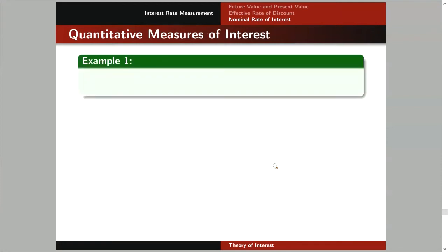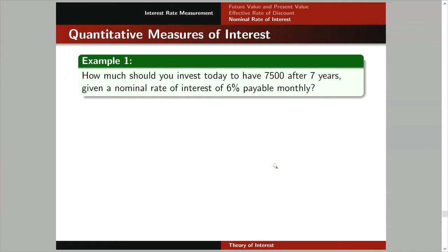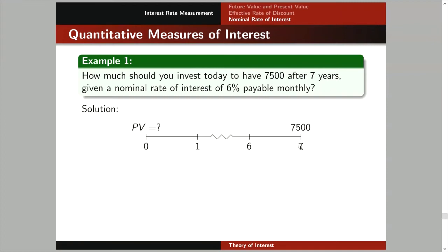Let's have some examples. First example: How much should you invest today to have $7,500 after 7 years if you're given a nominal rate of interest of 6% payable monthly? The notation for the nominal rate payable monthly is I upper 12. The time diagram shows $7,500 at t equals 7. We want to find how much to invest today. Don't immediately try to use I upper 12 directly — go back to basics.